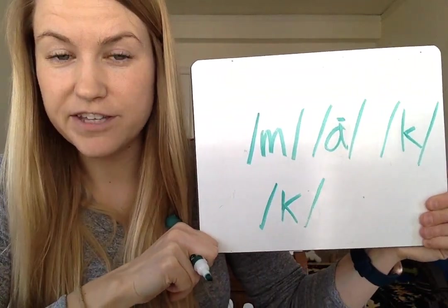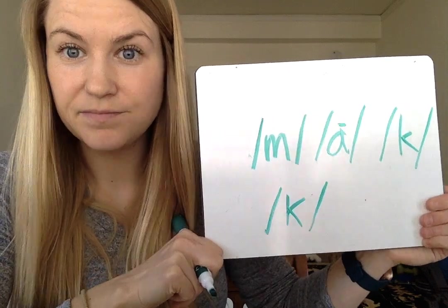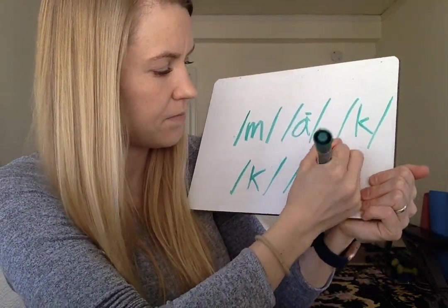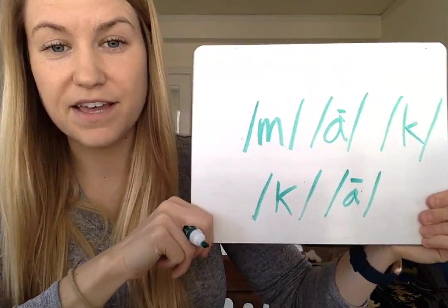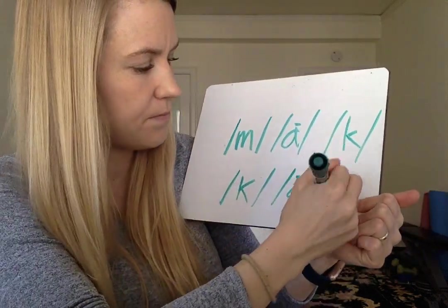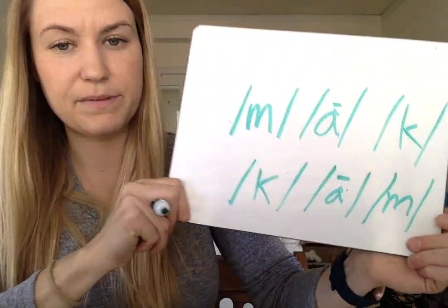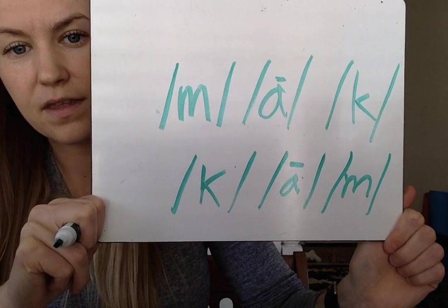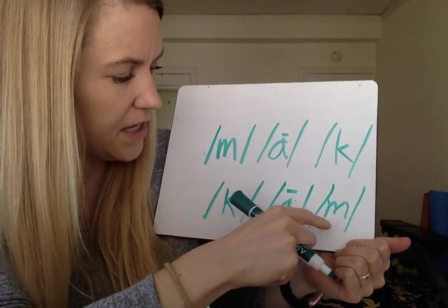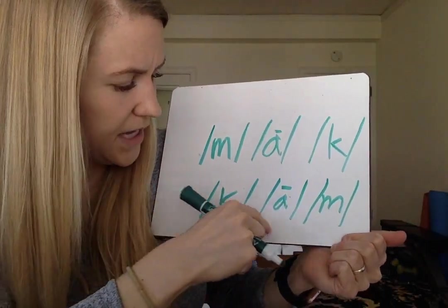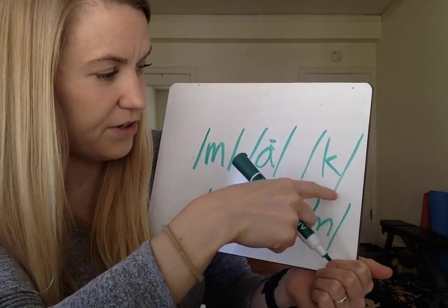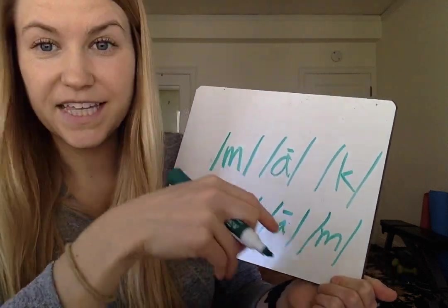What's that middle vowel sound we hear? A. And what's that first sound we hear? M. A little messy, but that's okay. So put them together: K... A... M. Came! We took the word 'make' and we turned it into 'came.'